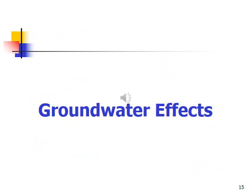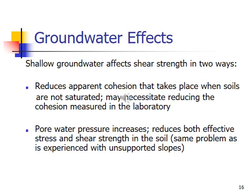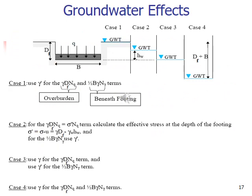Groundwater affects the foundation and ultimate bearing capacity. So we have to analyze the groundwater, where the groundwater is lying, how deep it is. Shallow groundwater affects shear strength in two ways. This reduces apparent cohesion that takes place when soils are not saturated, may necessitate reducing the cohesion measured in the laboratory. Pore water pressure increases, reduces both effective stress and shear strength in the soil. Same problem as experienced with unsupported slopes also.